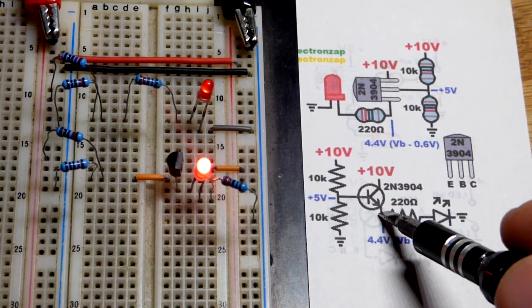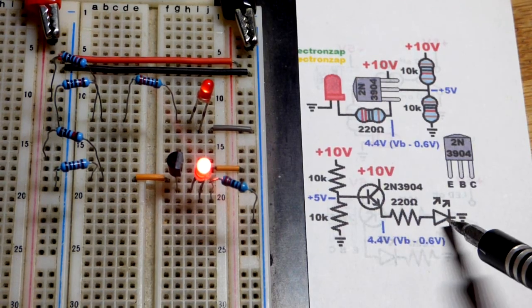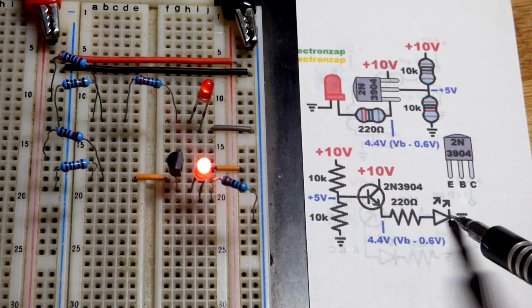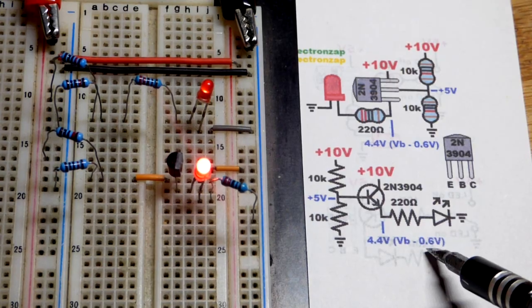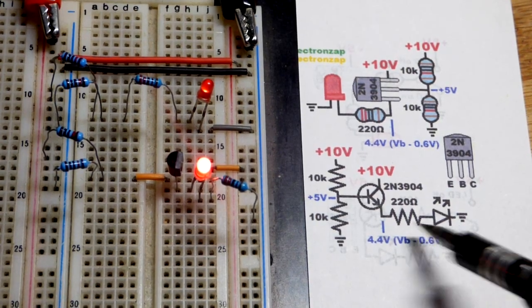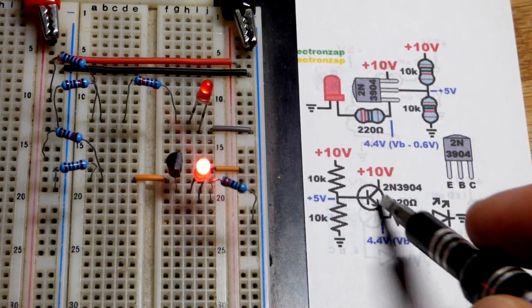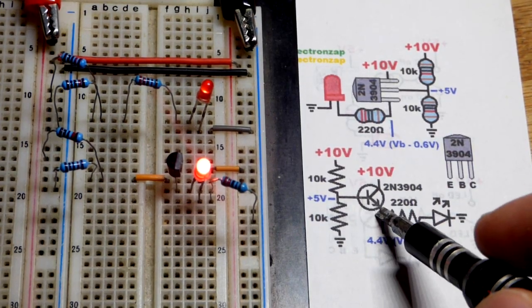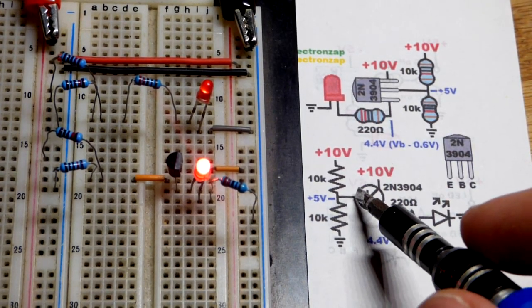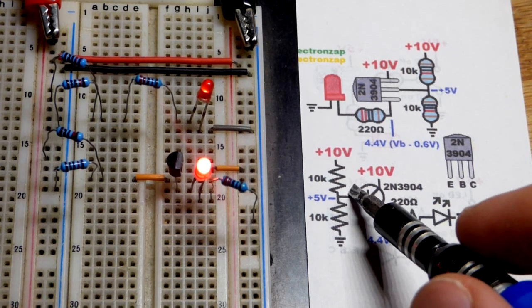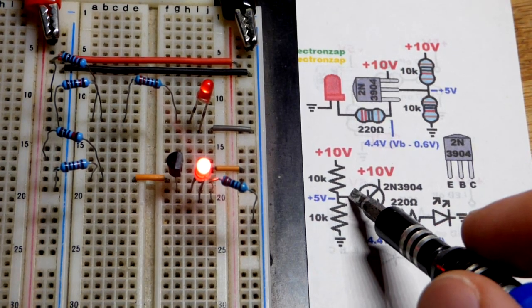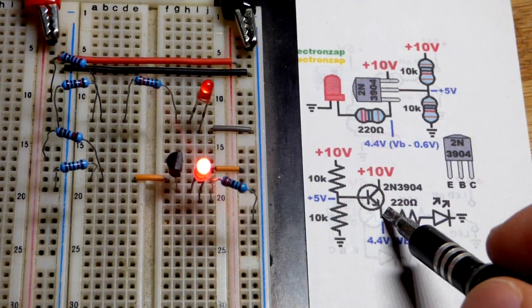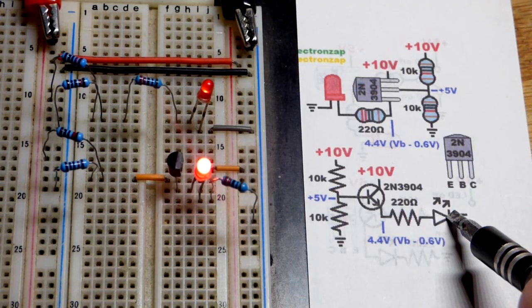And that's going to tell the transistor, because it's wired as an emitter follower, to output that same voltage, other than we're going to lose about 0.6 volts. Because the emitter here, it drops about 0.6 volts. It's like a diode right there. And so, it's going to try to get 5 minus about 0.6, so about 4.4 approximately volts across the load here.